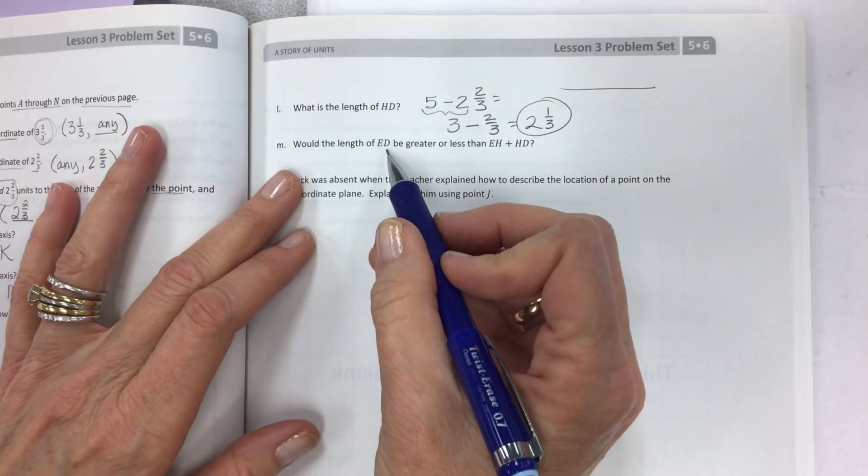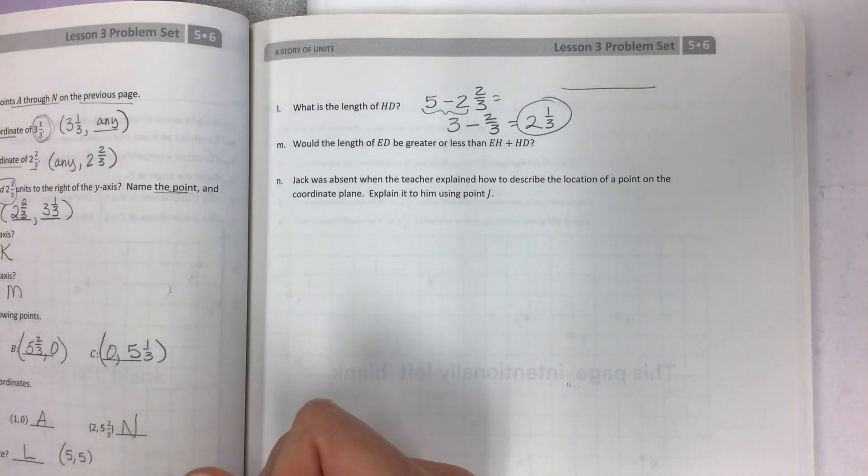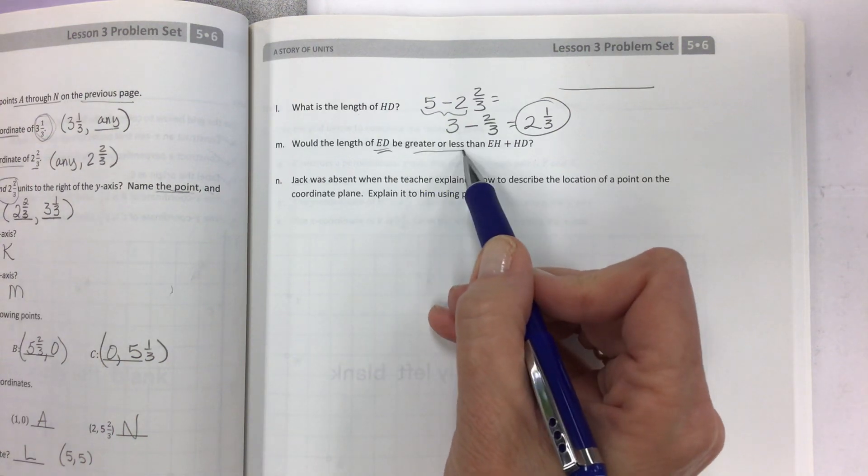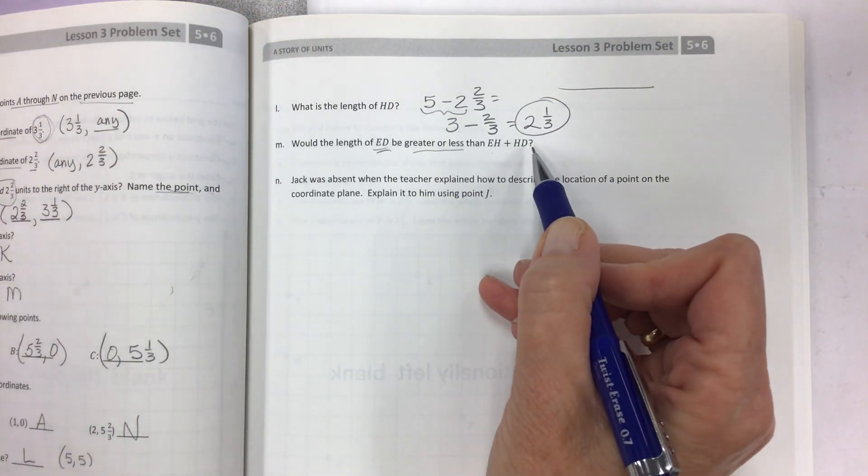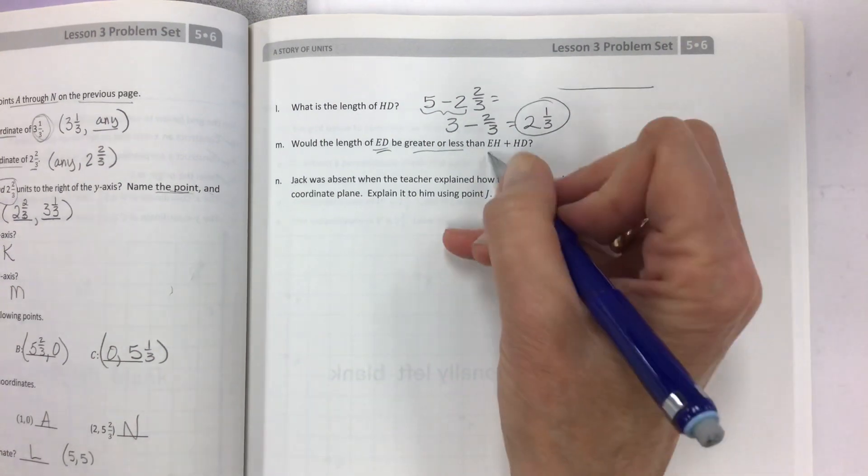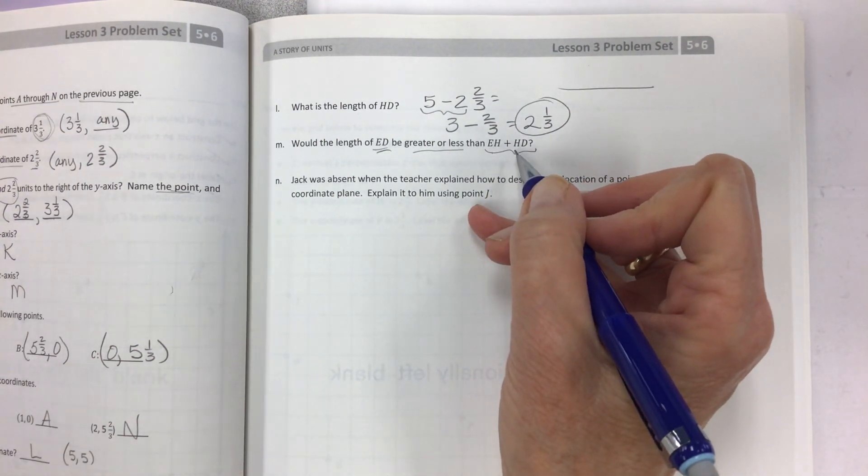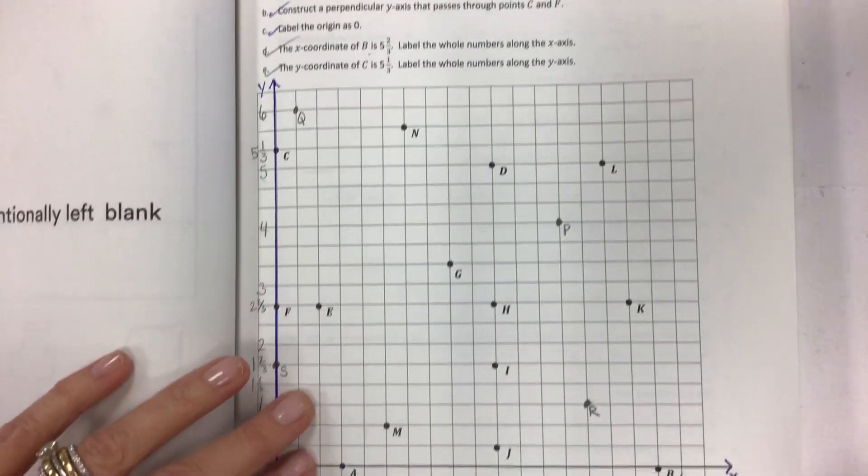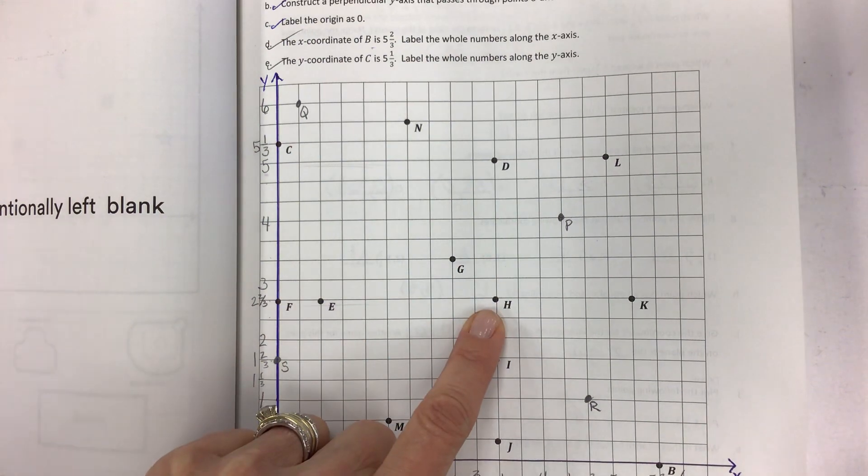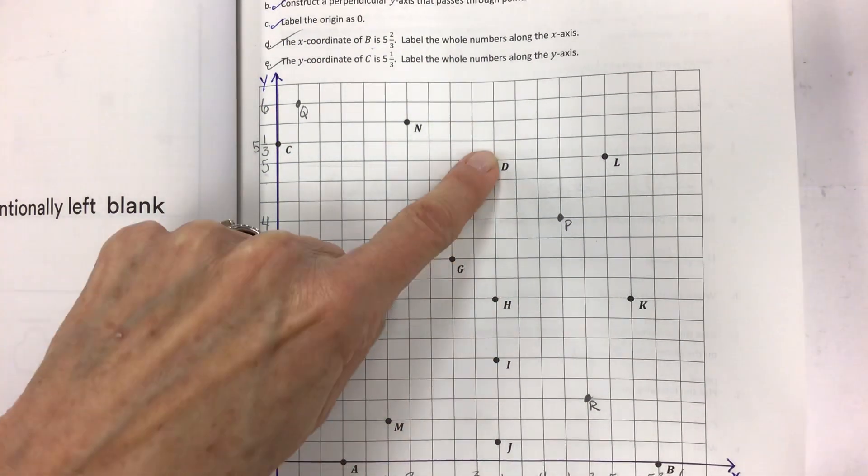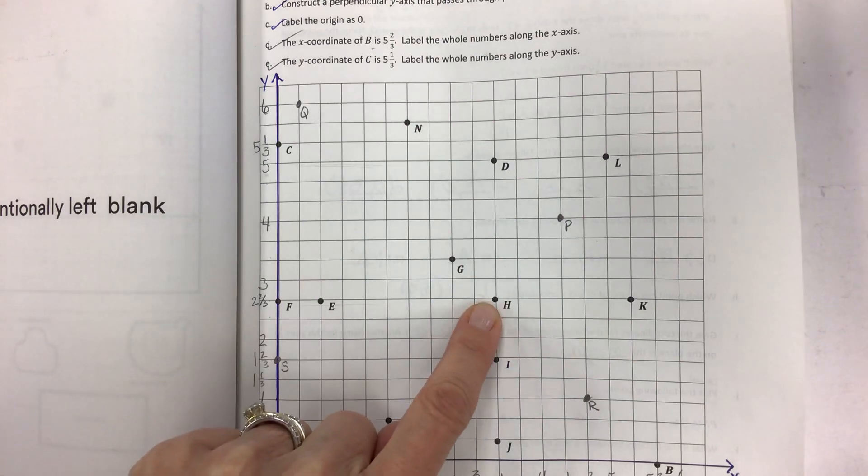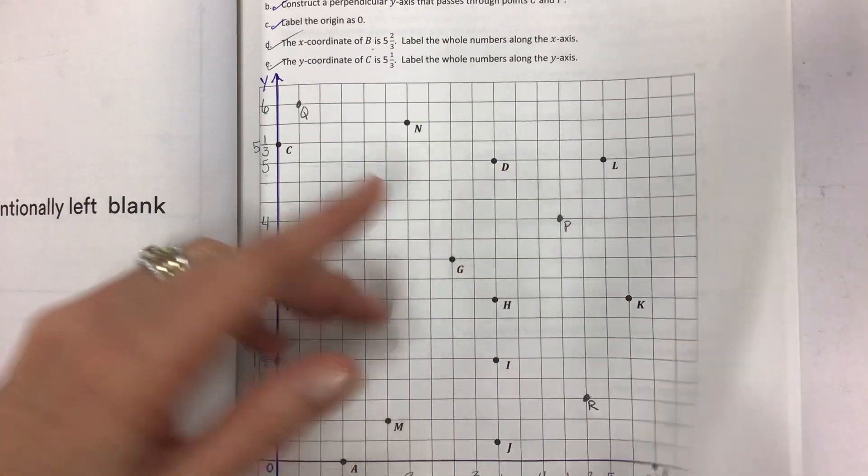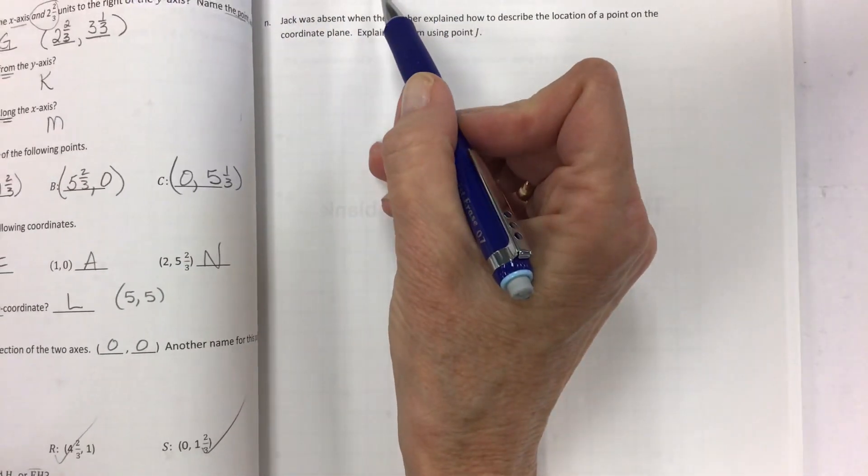Would the length of ED, the previous one, sorry, that's a totally different one. Would the length of ED be greater or less than EH plus HD? That's the one I was trying to refer to. So EH plus HD. You can look over here. EH plus HD. So that's a long distance to travel if you go all the way across here and up here. And then if you compare that to line ED, which would be here.